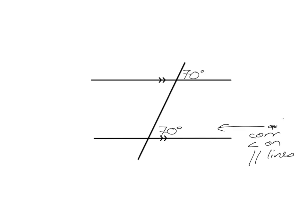Let's quickly look at the notation I'm using. I abbreviate corresponding to COR, that stands for angle, and that's how I indicate parallel lines — you'd say the two lines are parallel by just using these two vertical stripes. So that's 70, got by saying corresponding angles on parallel lines. Now I can see I've got my U here, so I can use co-interior and say this one is 110 — co-interior angles on parallel lines. You could also have just used adjacent angles on a straight line to get 110.